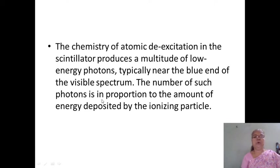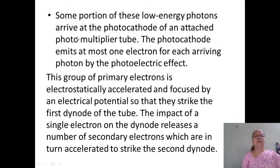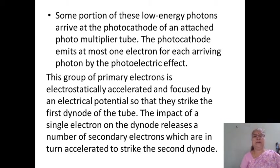The number of such photons is in proportion to the amount of energy deposited by the ionizing particle. Some portion of these low energy photons arrive at the photocathode of an attached photomultiplier tube. The photocathode emits at most one electron for each arriving photon by the photoelectric effect — the ejection of an electron from the metal.